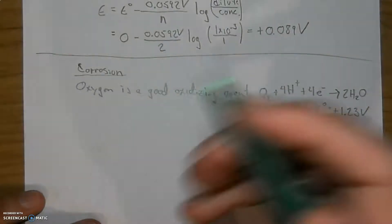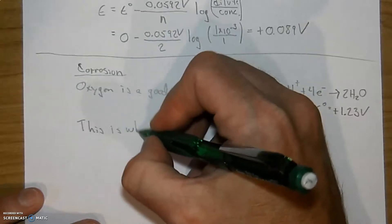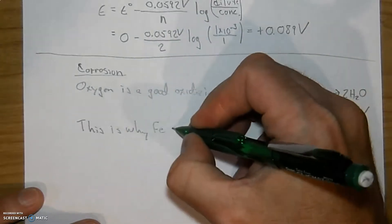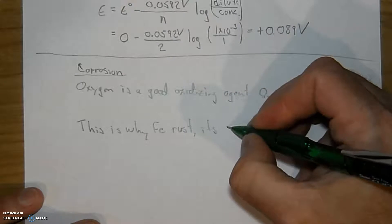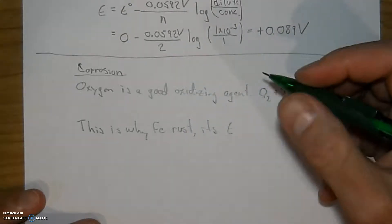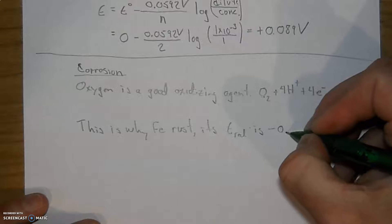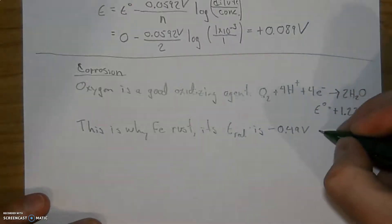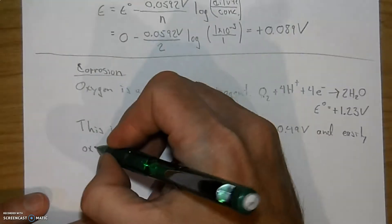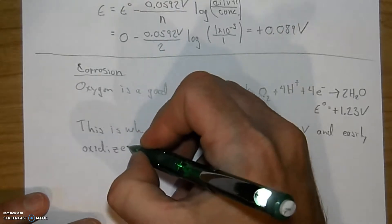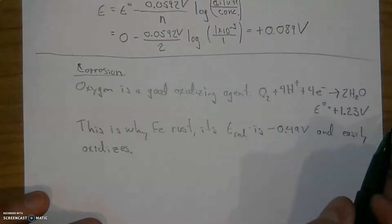Okay we're not done here. Well this listed a little bit more information. This is why iron, its cell potential for reduction is negative 0.49 volts and easily oxidizes.